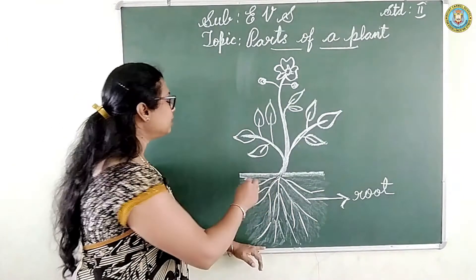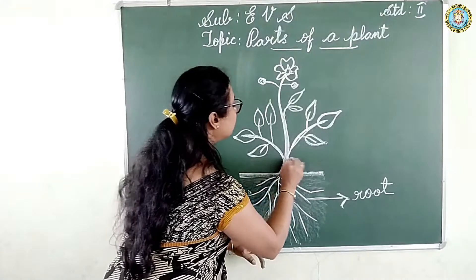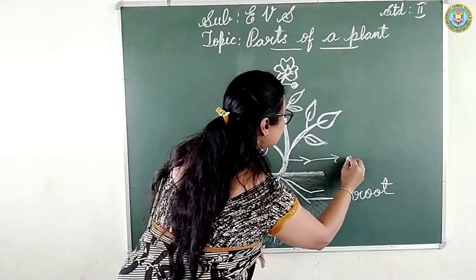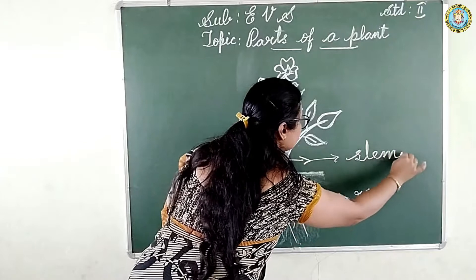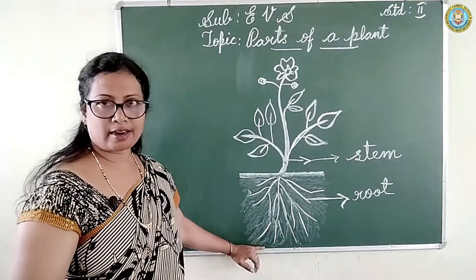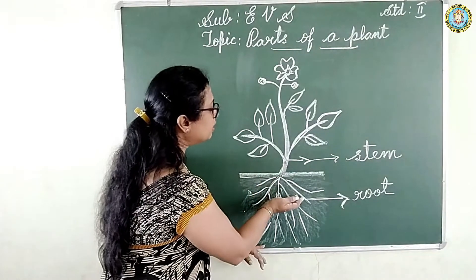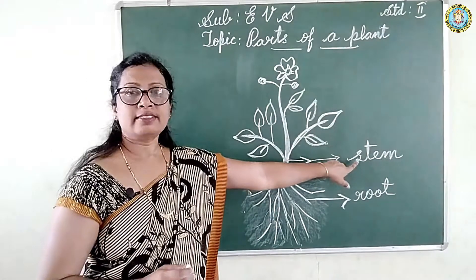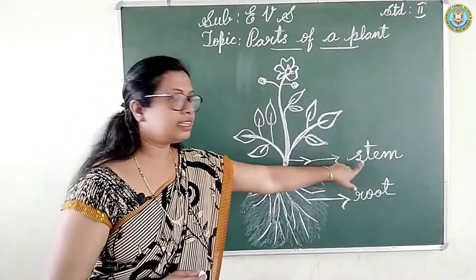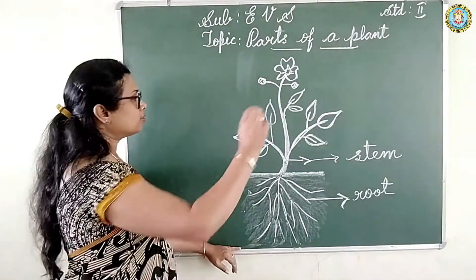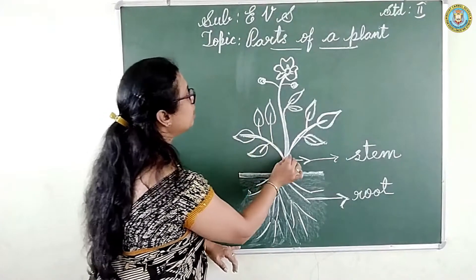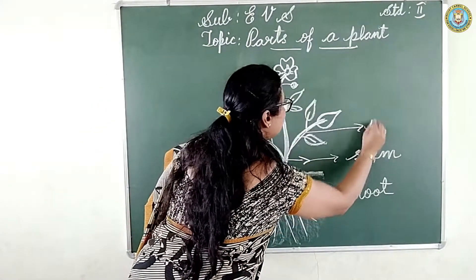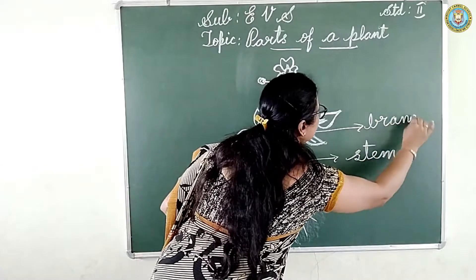Look at the next part — above the soil. That is stem. Under the ground there is a root, and above the soil you can see the stem. These are the branches. B-R-A-N-C-H, branch.